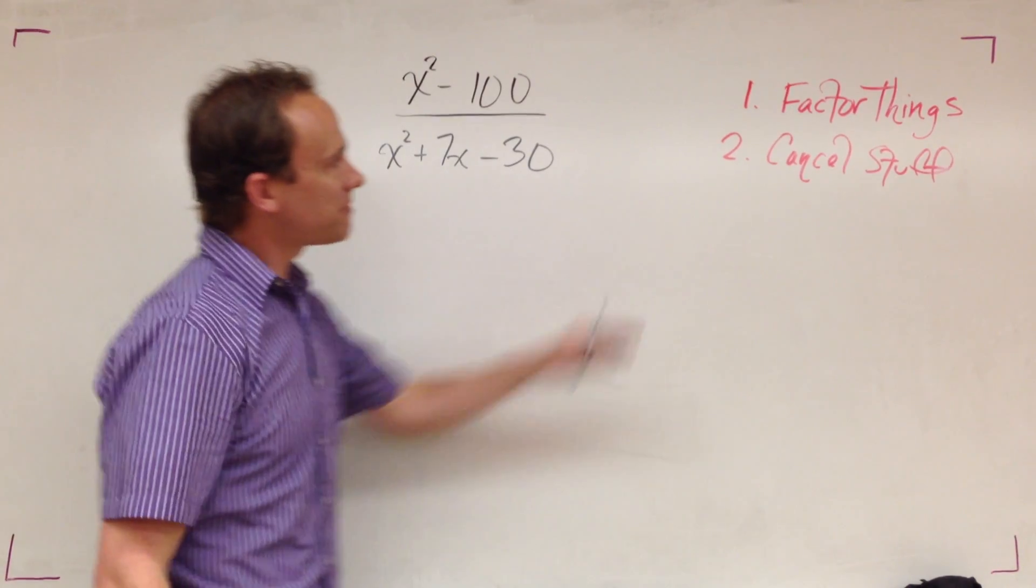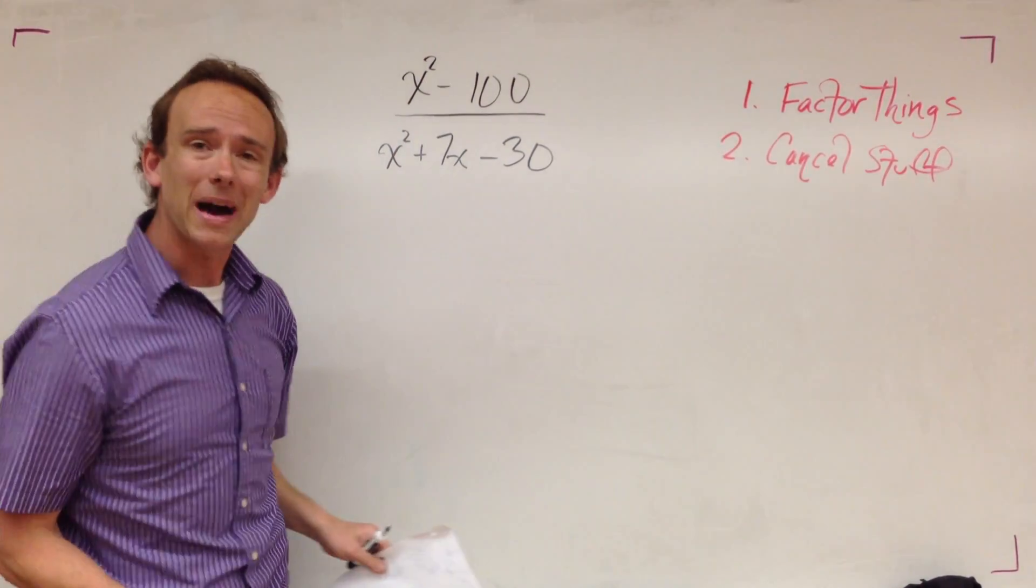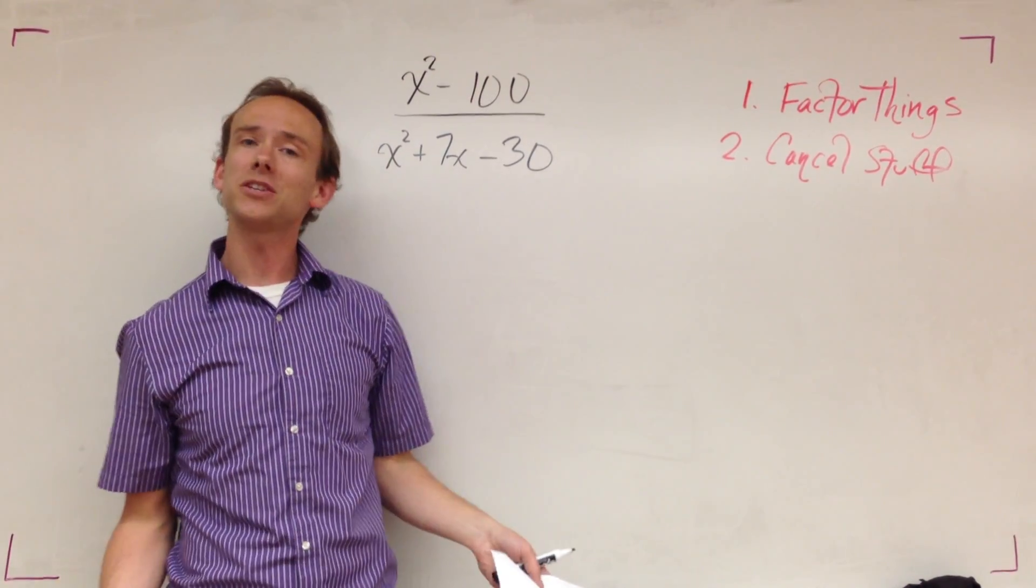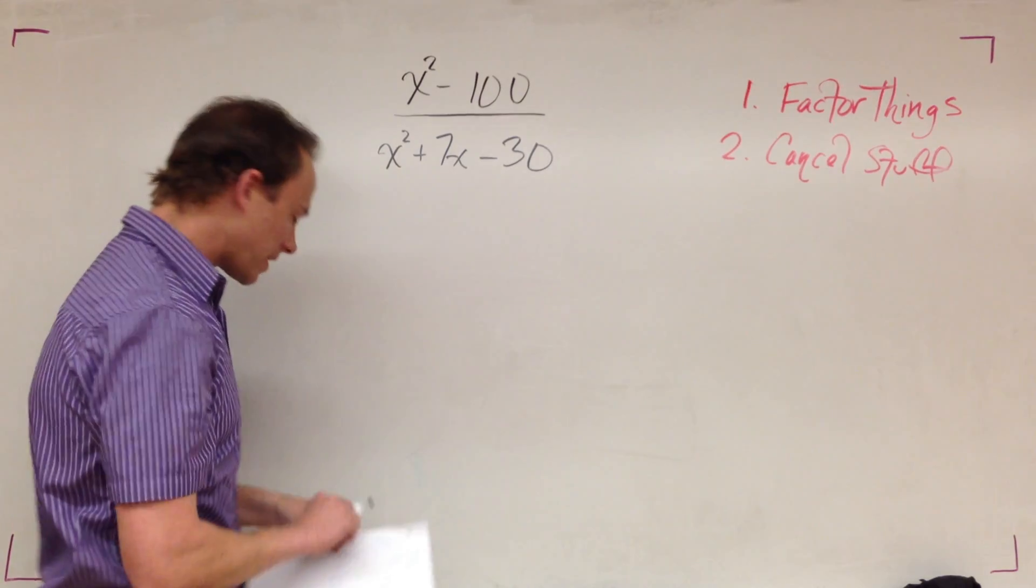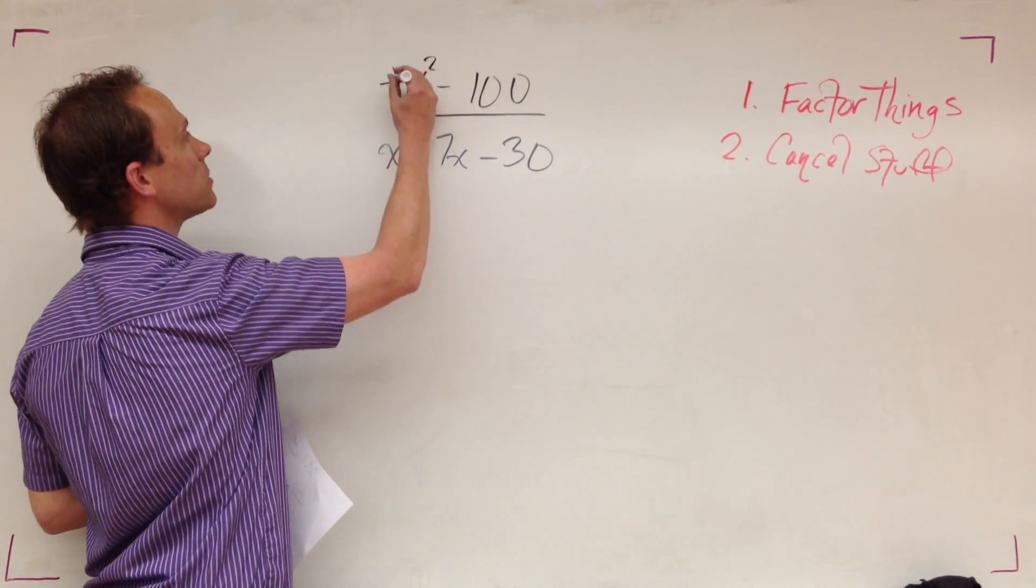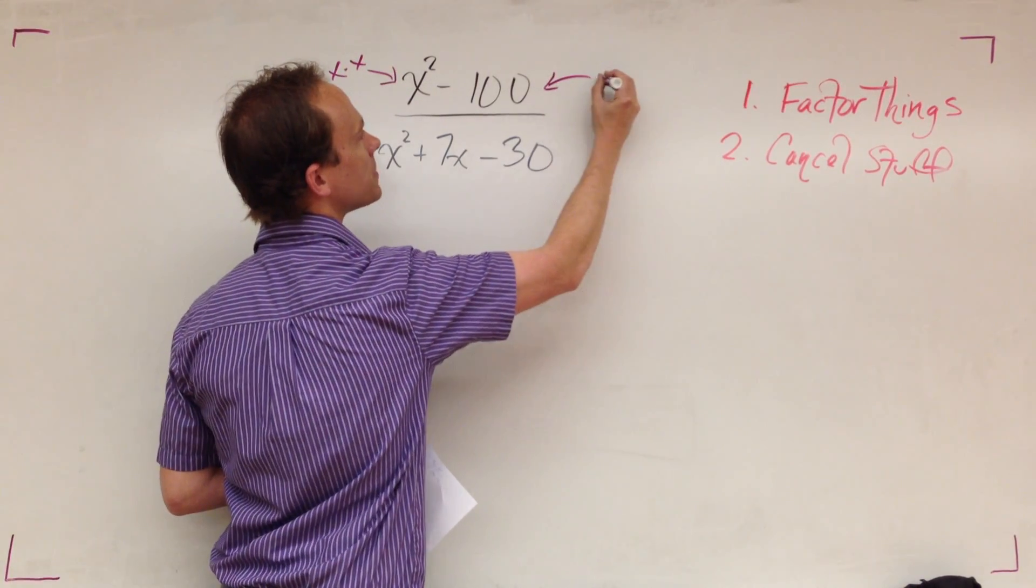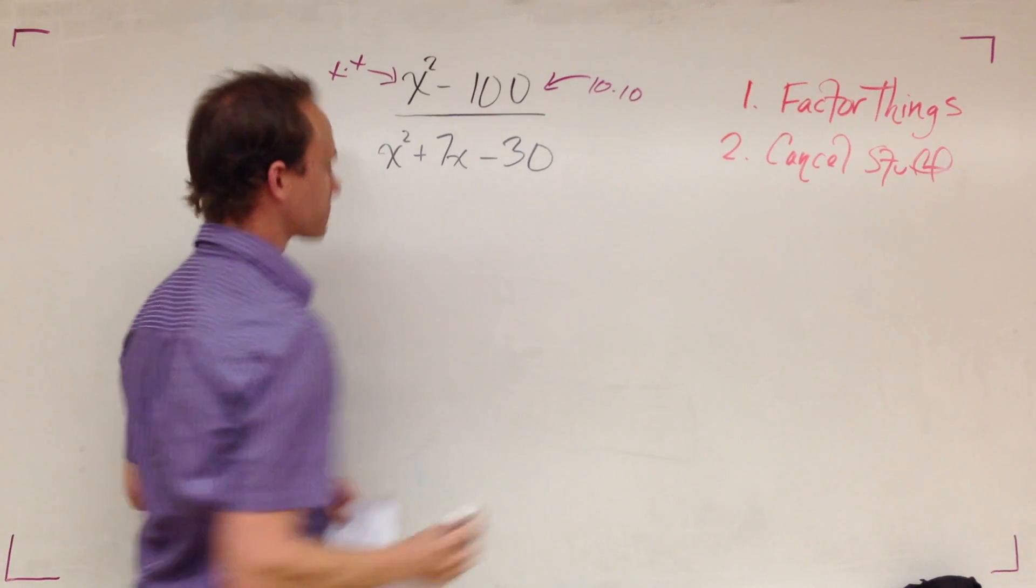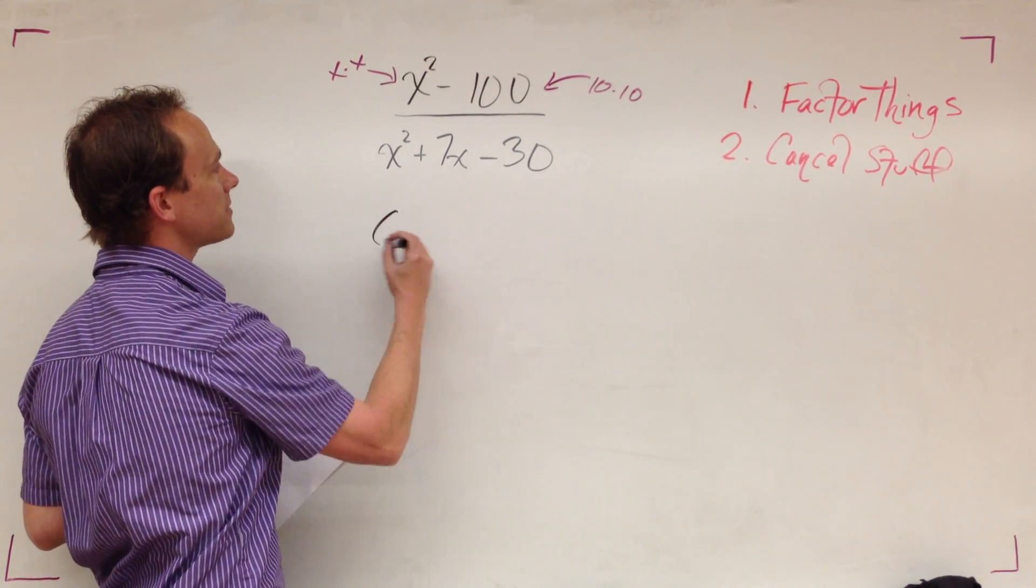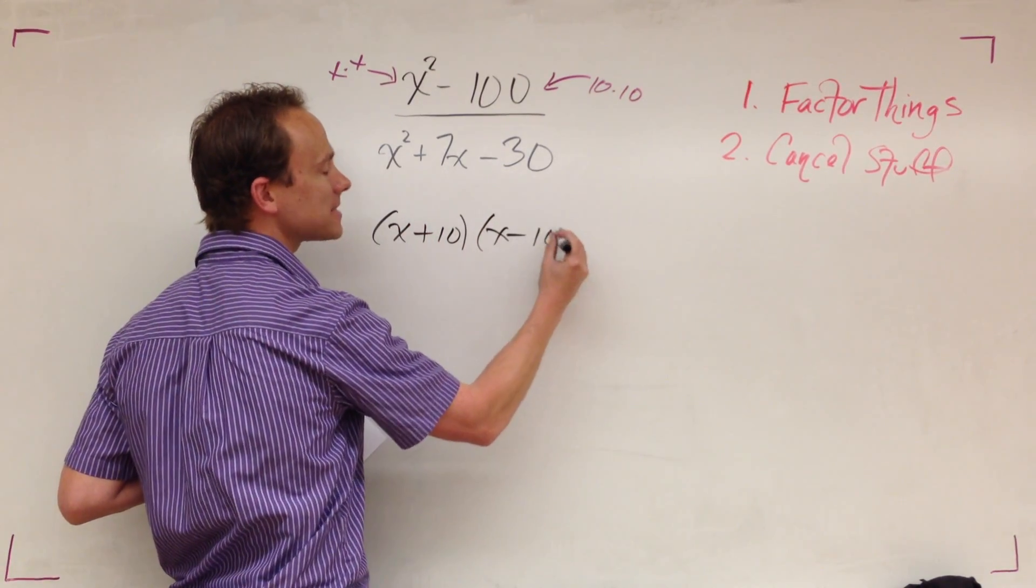Factor things. The numerator here, we got ourselves a binomial, two terms, so we're either going to use greatest common factor or a difference of squares. But this is a difference of squares because x squared is x times x and 100 is 10 times 10. Thus we use what we know of a difference of squares, so that's going to give us x plus 10, x minus 10.